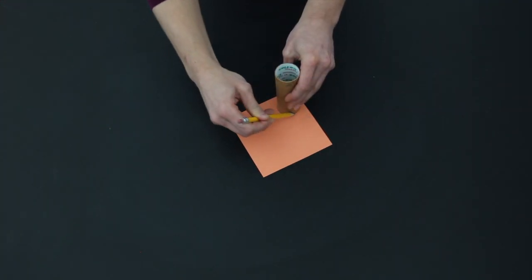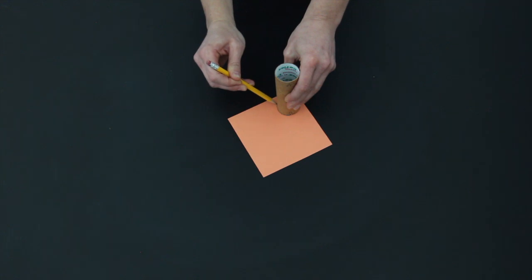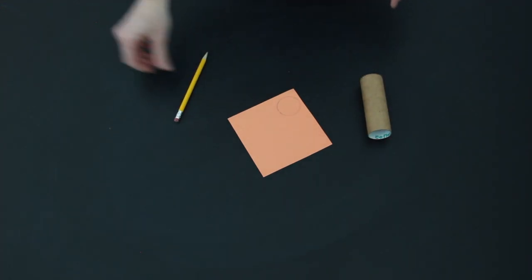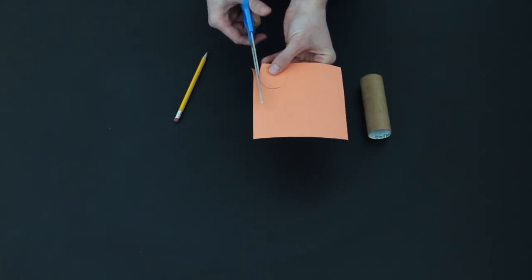To get these, we need a template. Trace around one end of the tube on a piece of construction paper with a pencil. Then cut out the circle to make your template.